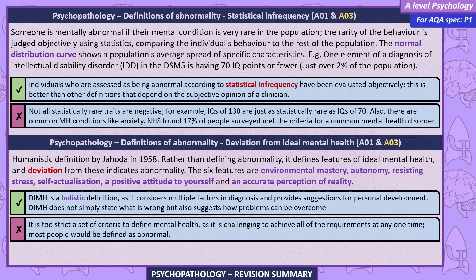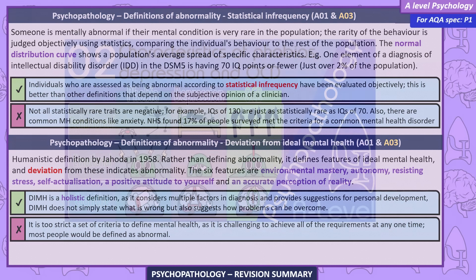Evaluations. This is a holistic definition as it considers multiple factors in diagnosis and provides suggestions for personal development. Deviation from ideal mental health does not simply state what is wrong, but also suggests how problems can be overcome. However, it's too strict a set of criteria to define mental health, as it's challenging to achieve all of the requirements at any one time, meaning most people would be defined as abnormal.